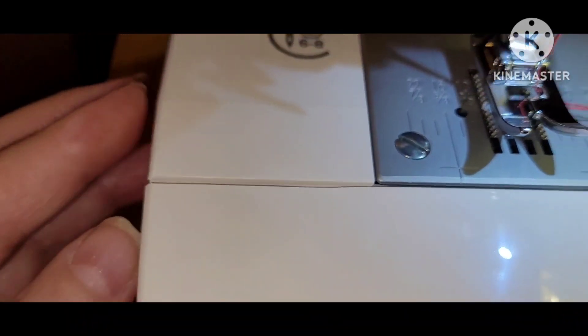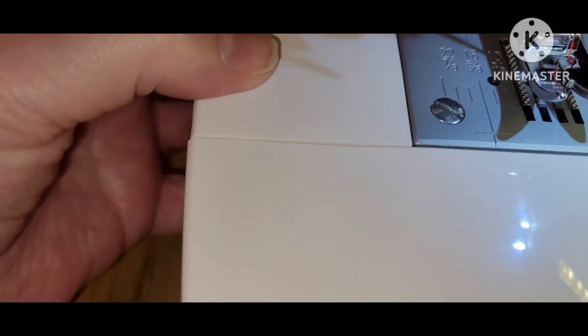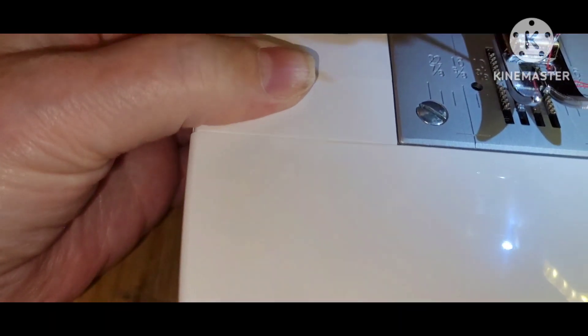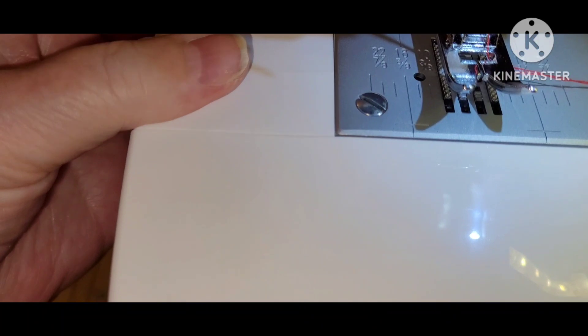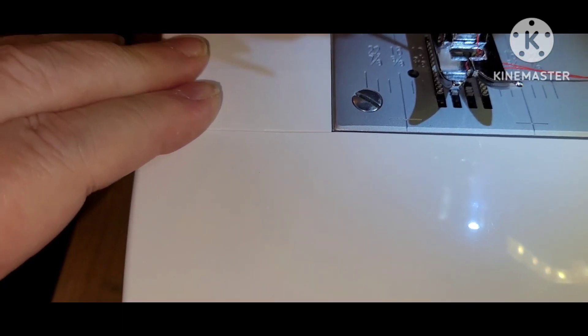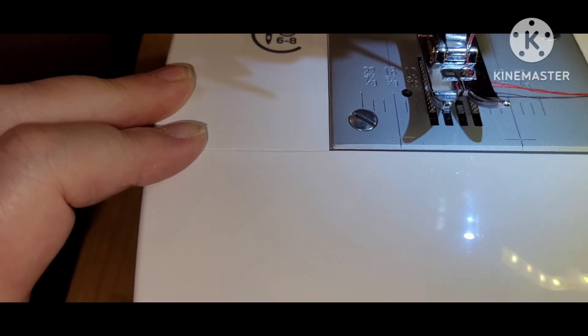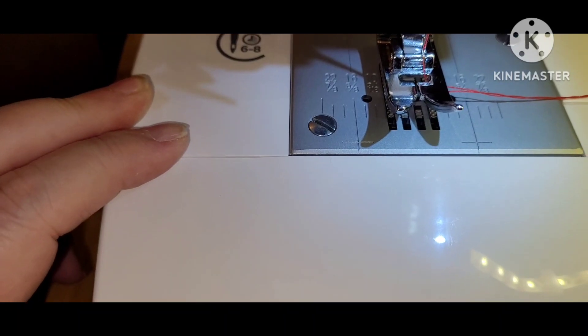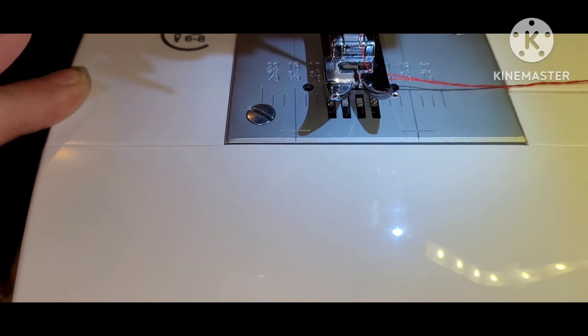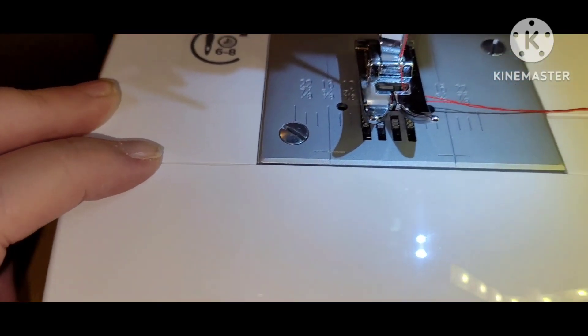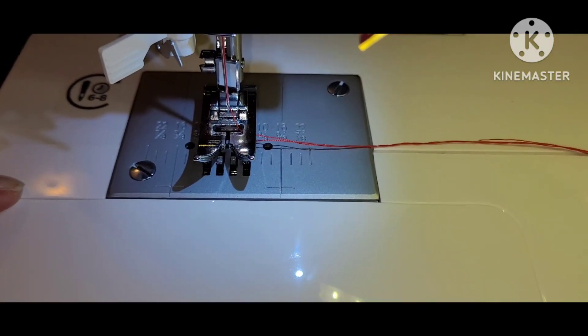And the other thing that's not flush here is when I replace the accessories case and I want to be doing free motion stitching, this isn't flush either. So this sticks up. There is nothing, there's no reason why that piece of plastic should not be flush. It's just bad engineering.